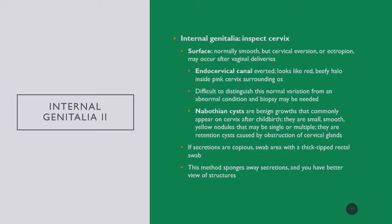If there are a lot of secretions within the vaginal vault—blood or STI secretions—use a large swab to sponge that up and discard it to get a better view of the internal structures. We use large cotton-tip applicators, roughly the size of your thumb, for this purpose.